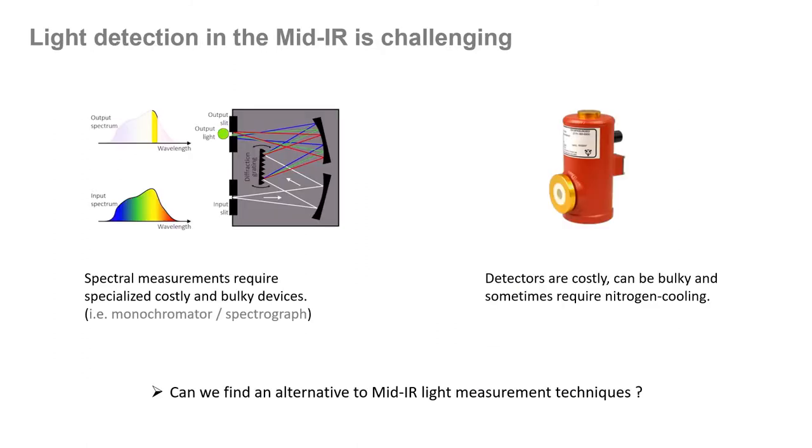However, mid-infrared lasers are still pretty expensive. Hence, broadband incoherent light sources such as thermal emitters or LEDs that cost around a hundred dollars seem the logical choice. But as we stated earlier, spectral measurements require a specialized device, which happen to be both costly and bulky in the mid-infrared.